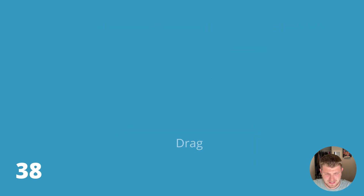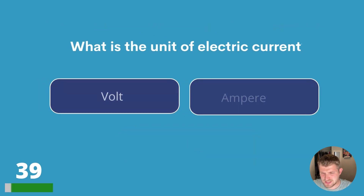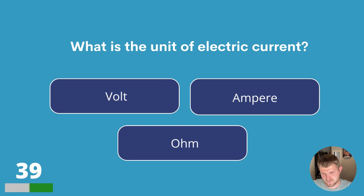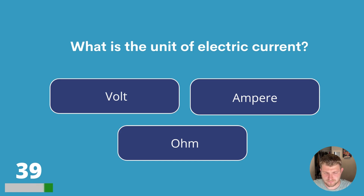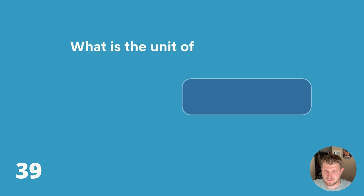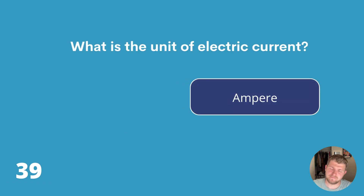Question thirty-nine. What is the unit of electric current? Volt, ampere or ohm? The answer is ampere.